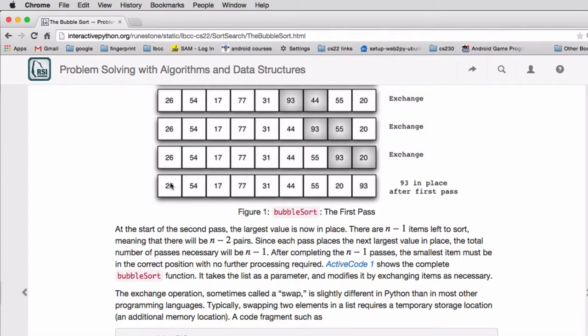It will move the next largest item, which looks like it's 77, in its proper position. Then you do one less smaller.